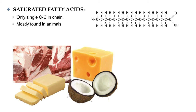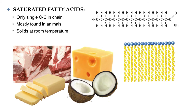One thing you may notice about animal fats, like butter, cheese, or fattened meat, is that they're all solids at room temperature. The reason for that is the lack of double bonds in the chain. Without double bonds, the fatty acids form straight chains — more like a zigzag shape, but still a straight chain — and that straight chain is able to stack close together.